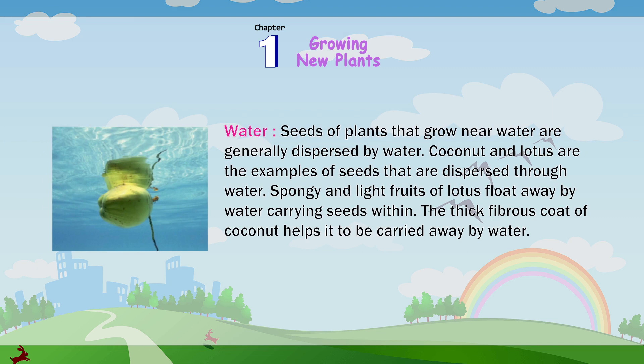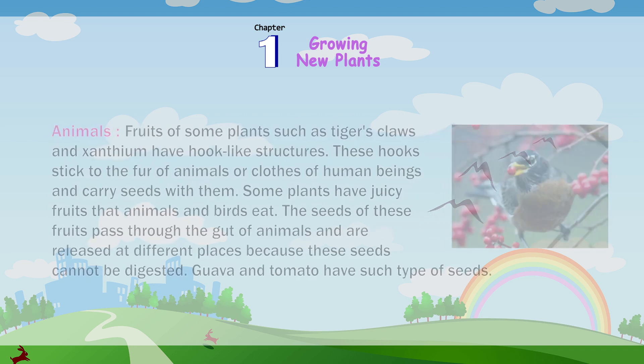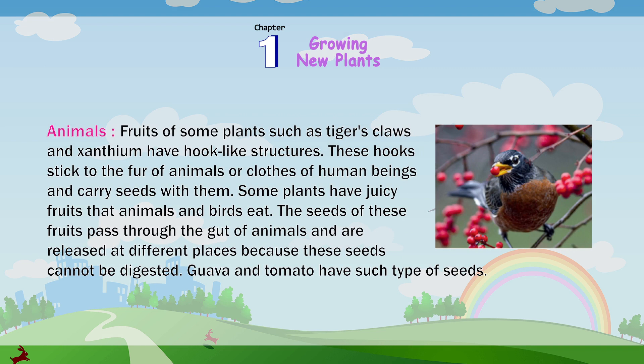Water: seeds of plants that grow near water are generally dispersed by water. Coconut and lotus are examples of seeds dispersed through water. Spongy and light fruits of lotus float away carrying seeds within. The thick, fibrous coat of coconut helps it be carried away by water. Animals: fruits of some plants such as tiger's claw and xanthium have hook-like structures. These hooks stick to the fur of animals or clothes of human beings and carry seeds with them. Some plants have juicy fruits that animals and birds eat. The seeds of these fruits pass through the gut of animals and are released at different places, as these seeds cannot be digested. Guava and tomato have such seeds.